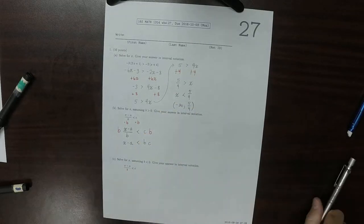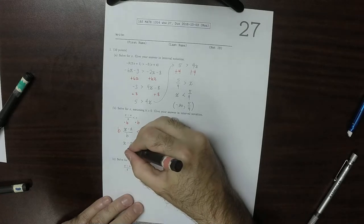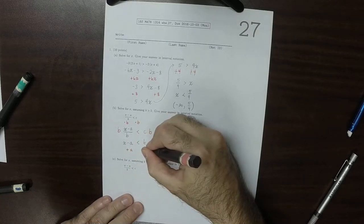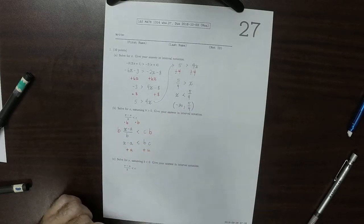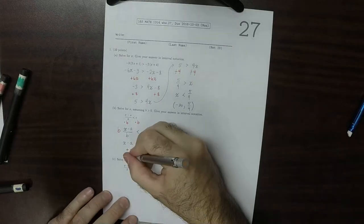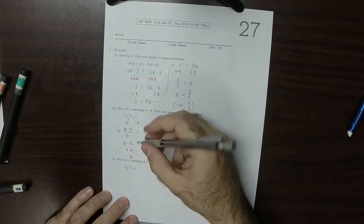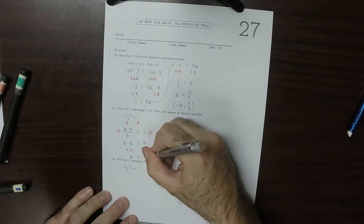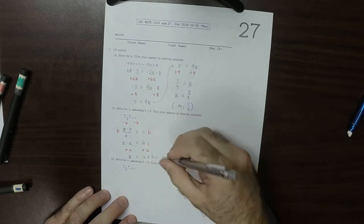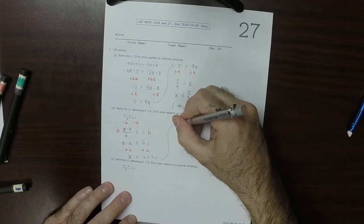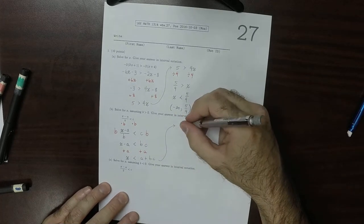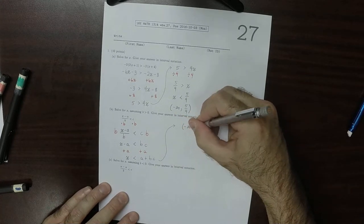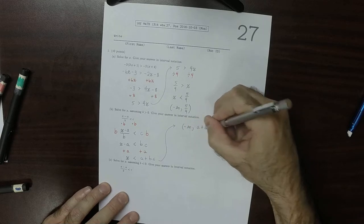So then now we can add a to both sides. So that would be x is less than a plus bc. So the answer is negative infinity to a plus bc.